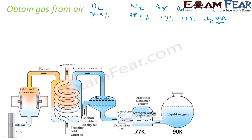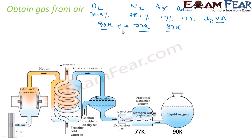To separate these components we need to use some physical property. Let's look at the boiling points. Nitrogen has a boiling point of 77 Kelvin, argon is 87 Kelvin, and oxygen is almost 90 Kelvin. We will ignore carbon dioxide and others. If you see, there is a difference in boiling points of almost 13 Kelvin, which is less than 25 Kelvin, so we have to use fractional distillation.